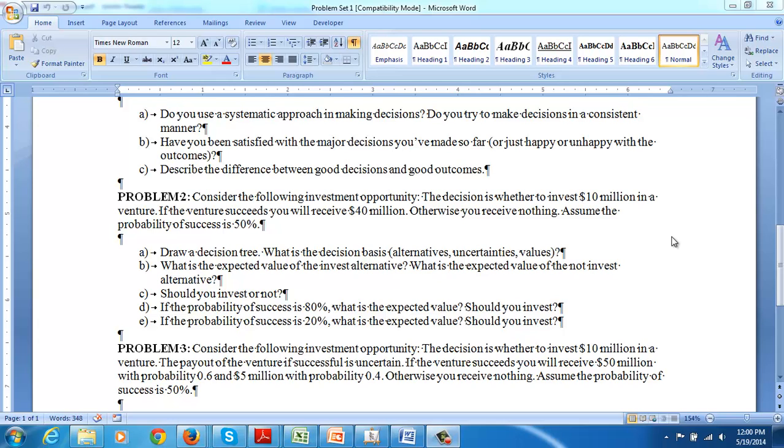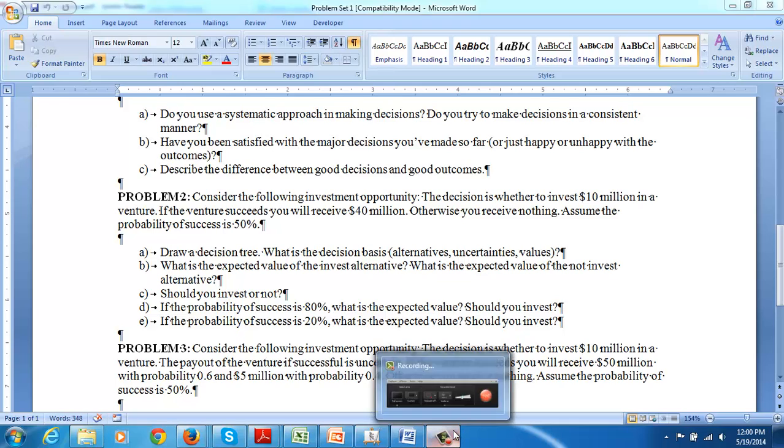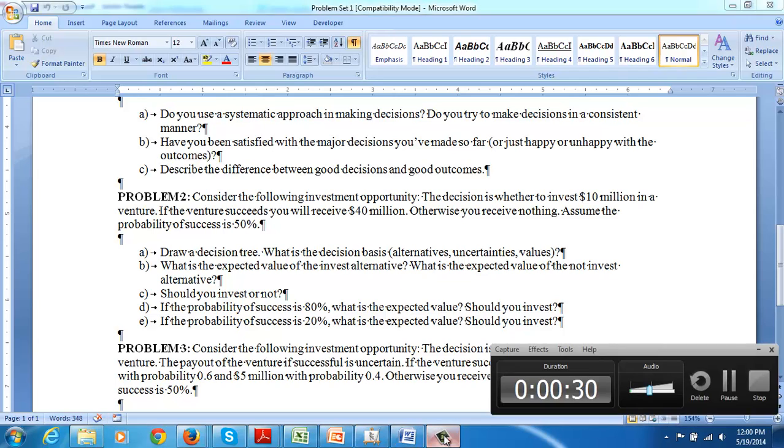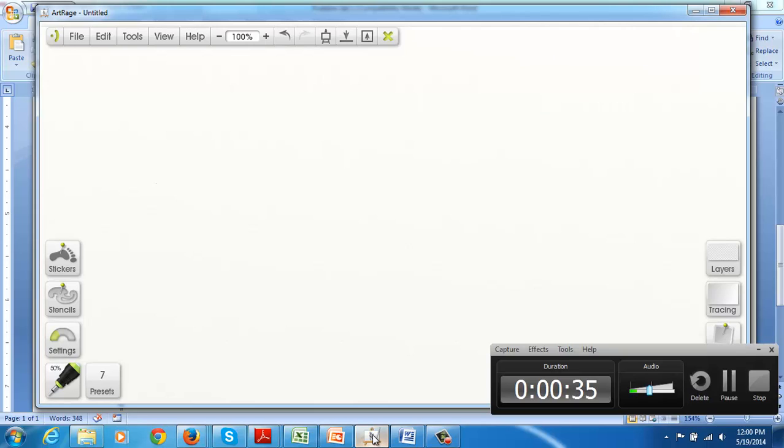The best way to frame this type of problem is using a decision tree. Let's go ahead and see if we can draw a decision tree of this problem. We have decision. Usually we use a box or a square to represent the decision. And then emanating from that are two alternatives. We have the invest alternative. And then considering on the path there, we can either succeed. Circle represents uncertainty.